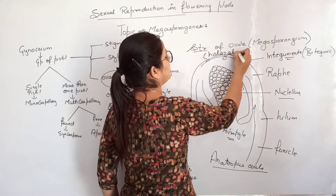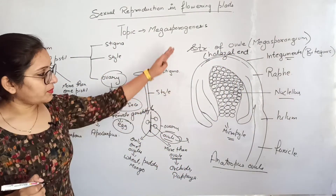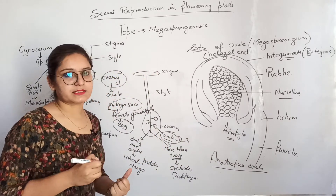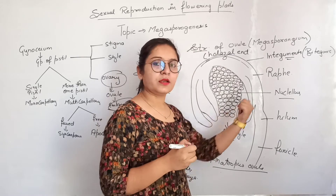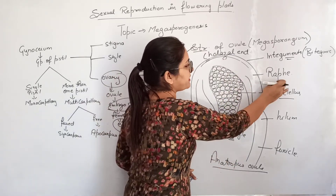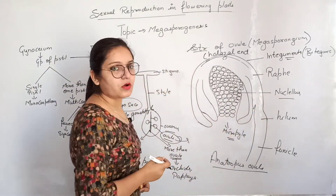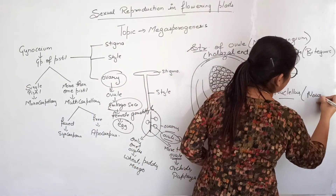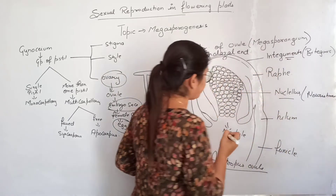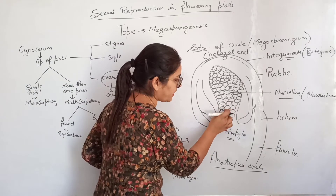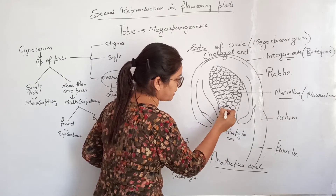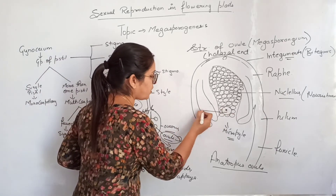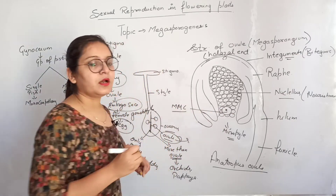In the structure of an ovule, there is a funicle attached to the placenta, then the hilum, the raphé, and the main body containing numerous nucellus cells covered by integument. The nucellus provides nourishment, and after receiving nourishment, one of the nucellus cells near the micropyle side becomes enlarged with dense cytoplasm and behaves as the megaspore mother cell, or MMC.